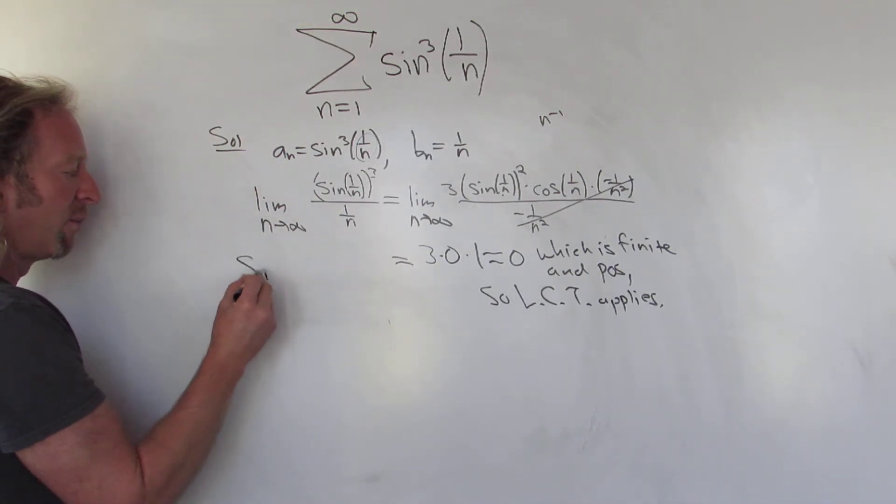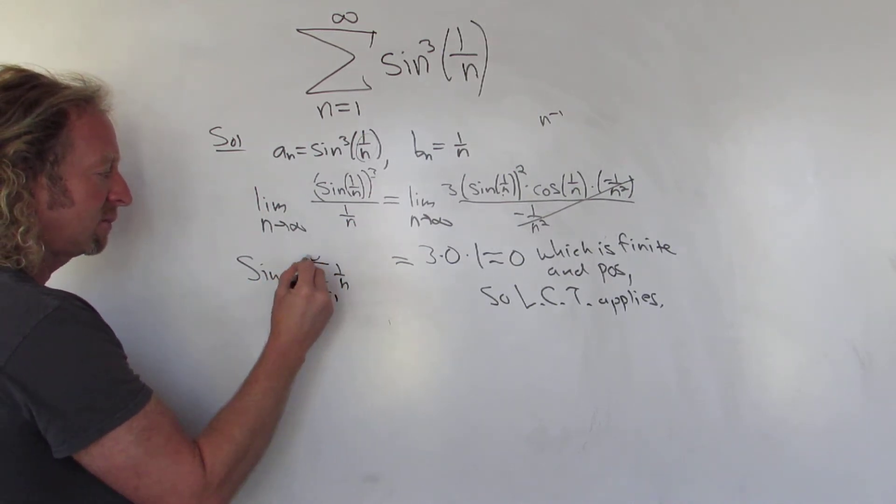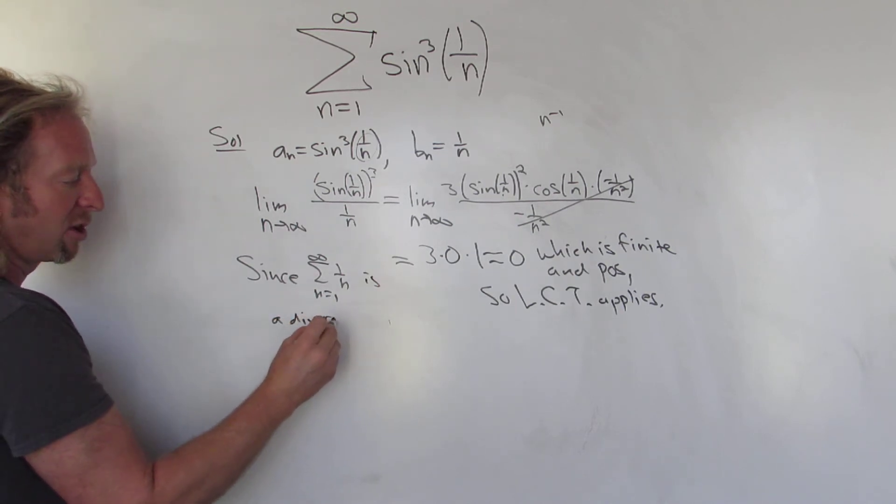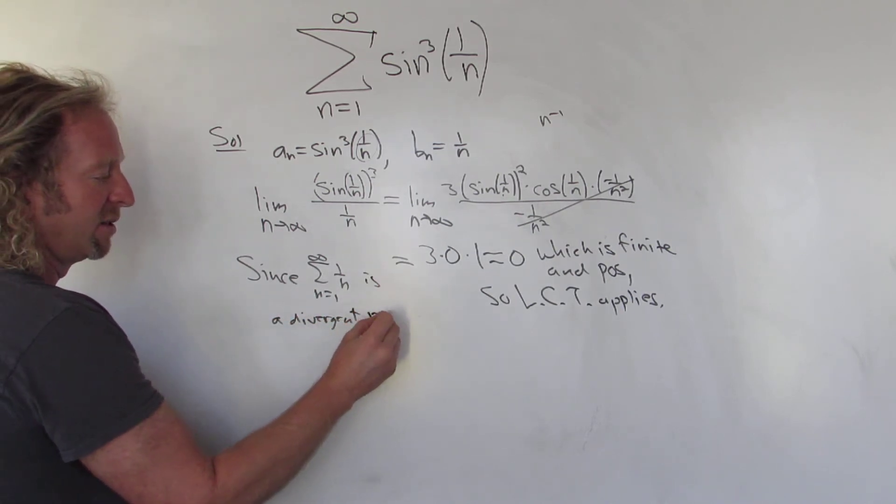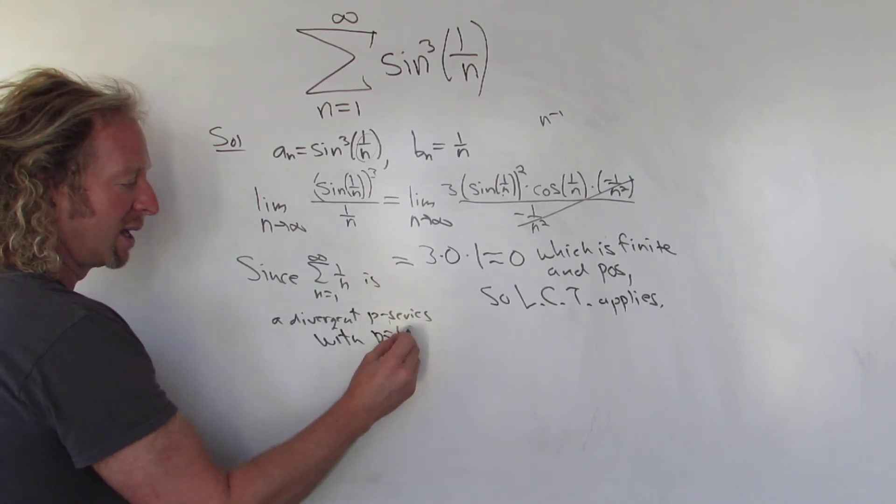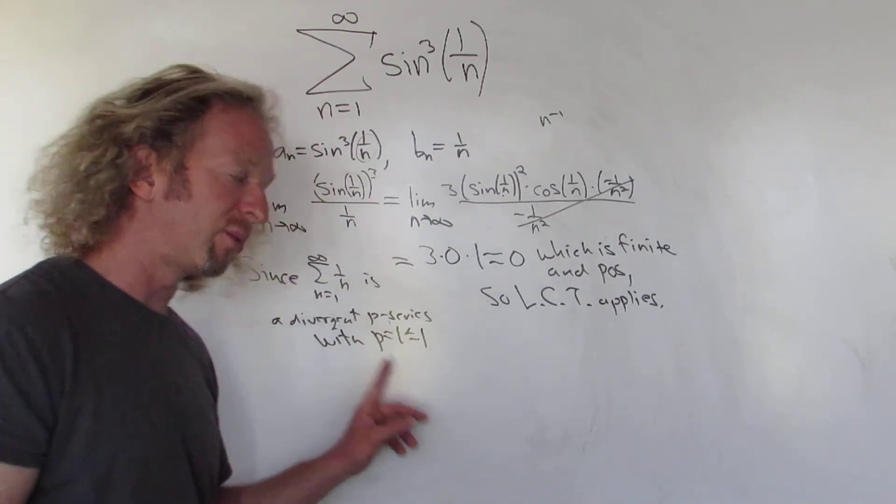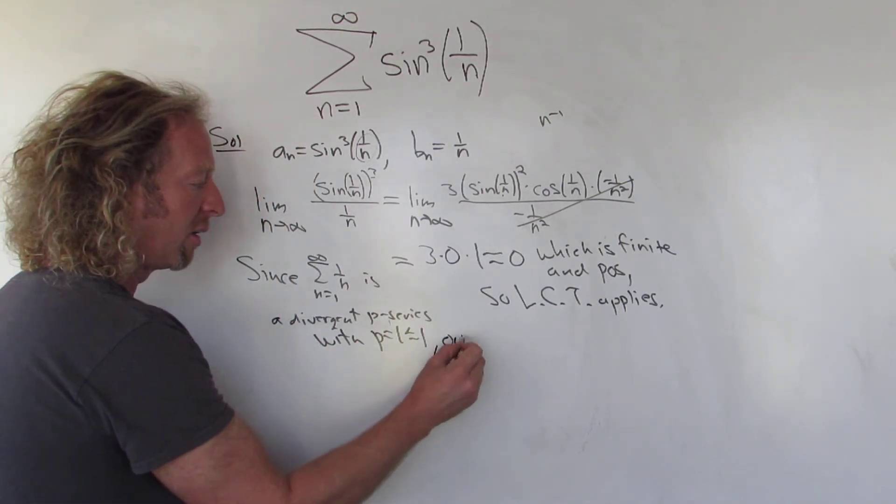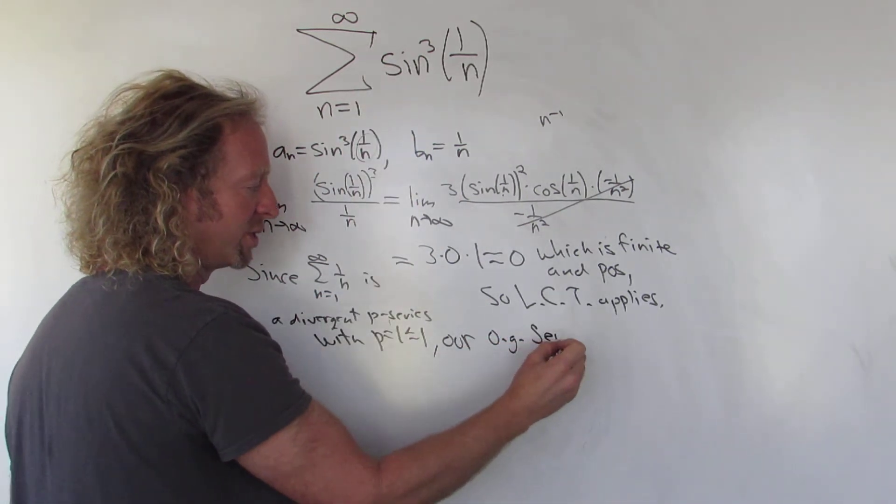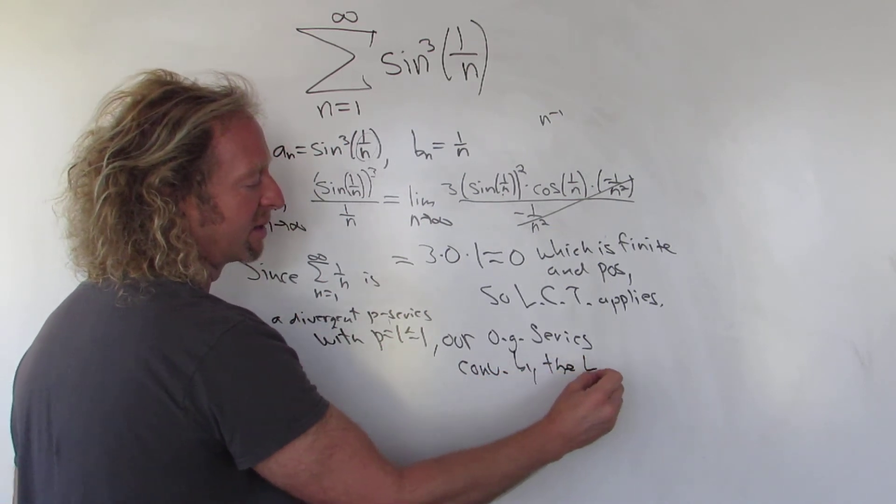Well, we all know 1 over n diverges, right? So since 1 over n is a divergent p-series, right, it's a p-series, it's called the harmonic series, a divergent p-series with p equals 1 less than or equal to 1. That's why it diverges, right? Remember, it will converge if p is bigger than 1. Our original series, this one, I'll just say our OG series—OG means original—converges by the limit comparison test.